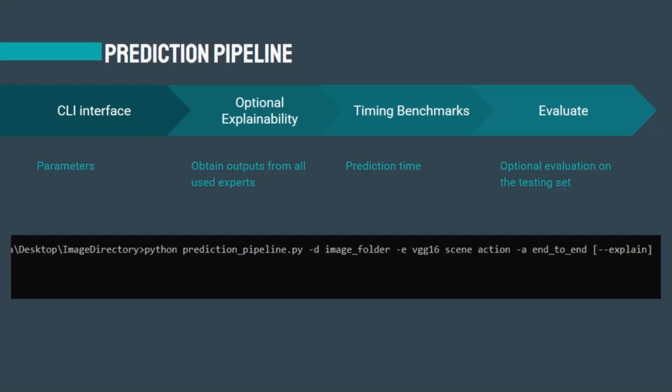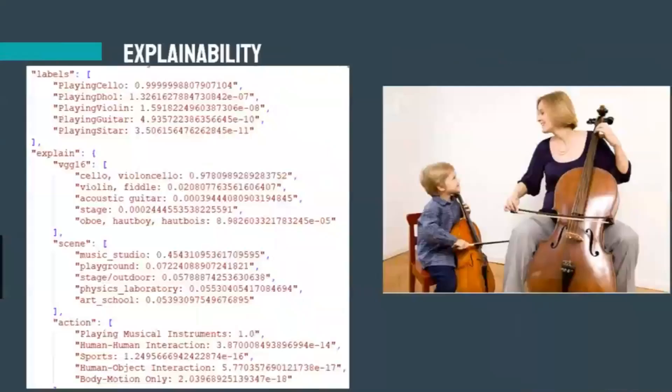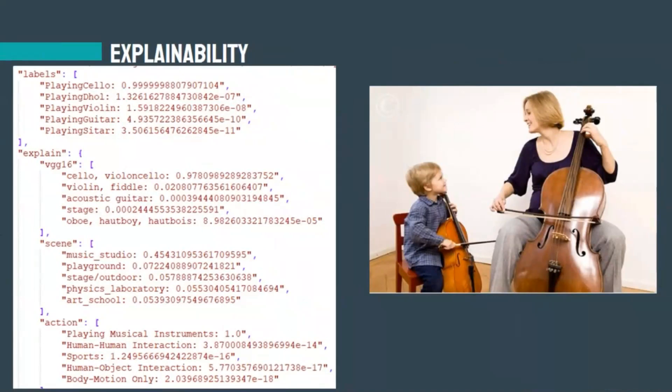This is an example of our explainability output from the prediction pipeline. This image belongs to the playing cello class, and it got correctly classified as playing cello with a very high probability. VGG16 detected that there is a cello in this image, the scene expert detected a music studio scene, and the action expert detected the playing musical instruments class — which is indeed the super class for playing cello in our dataset.